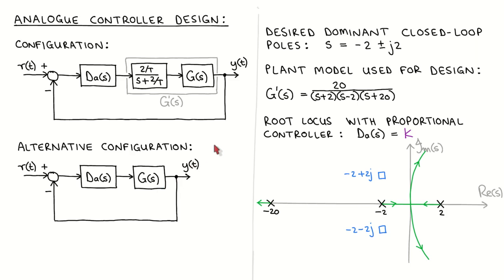From the specifications, we can easily calculate the desired location of the dominant closed loop poles to be at minus 2 plus or minus j2. We use the plant model augmented with the Padé approximation, which is written out here. For this example, we draw the root locus by hand. However, in practice, you would almost always use numerical software packages to do the root locus design.